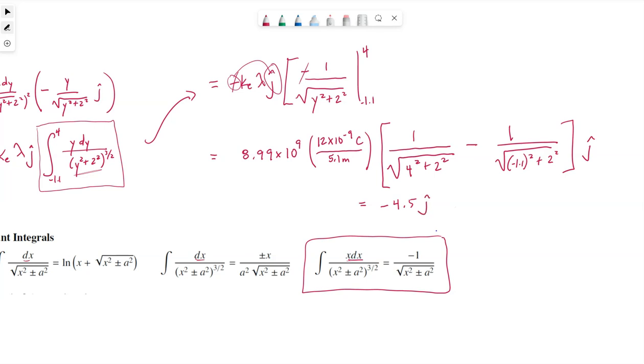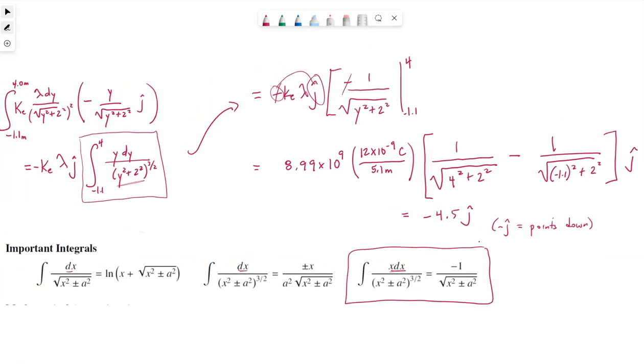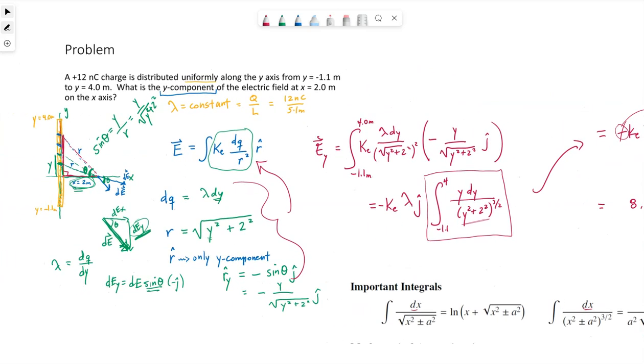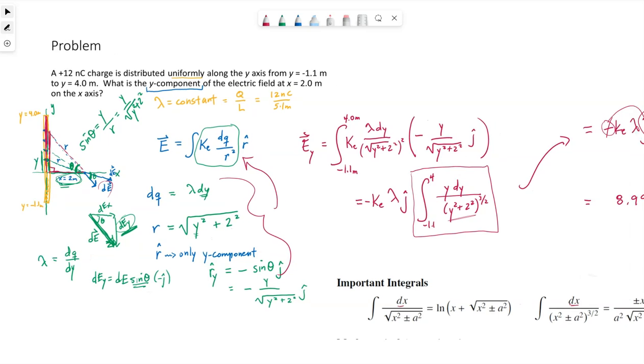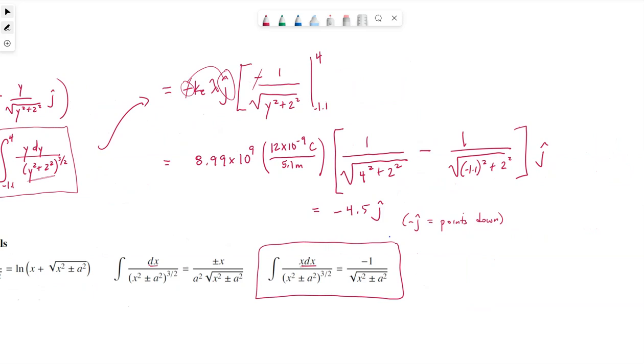The negative j-hat means it points down, which we already mentioned, right? If we scroll back over to this picture, there's more charge above the x-axis, so the overall y-component totally should point down. The magnitude is the 4.5. And then our units would end up coming out as newtons per coulomb. And we could follow that through if we wanted to. There's a meter. These guys end up being in meters. And then this meter cancels out with the meter squared in the numerator. This one coulomb cancels with one of those. And that's what leaves us with just the newtons per coulomb.